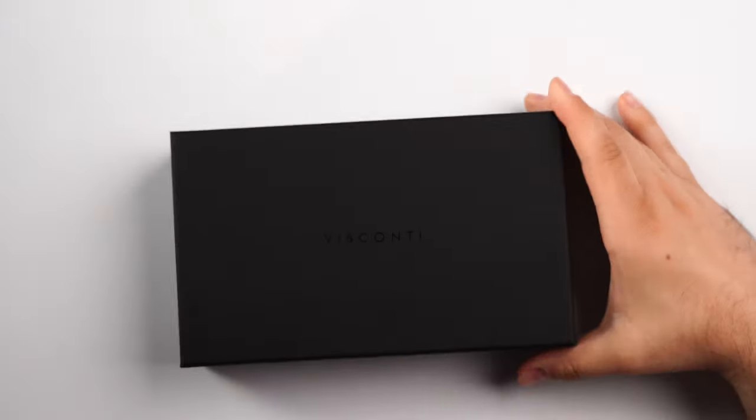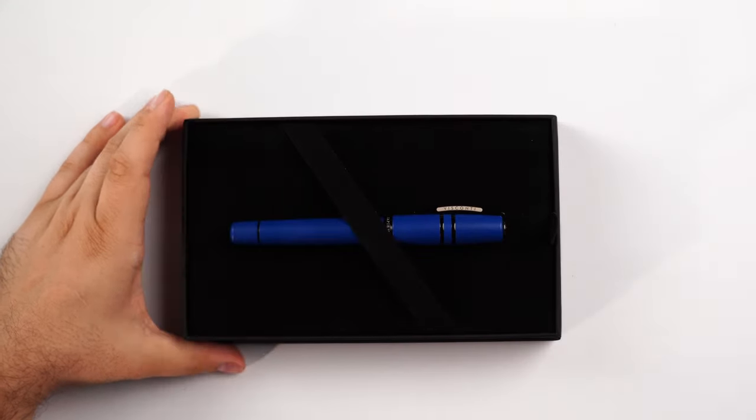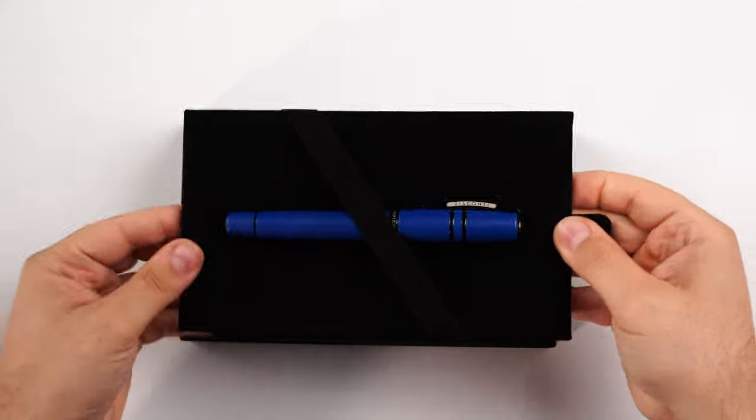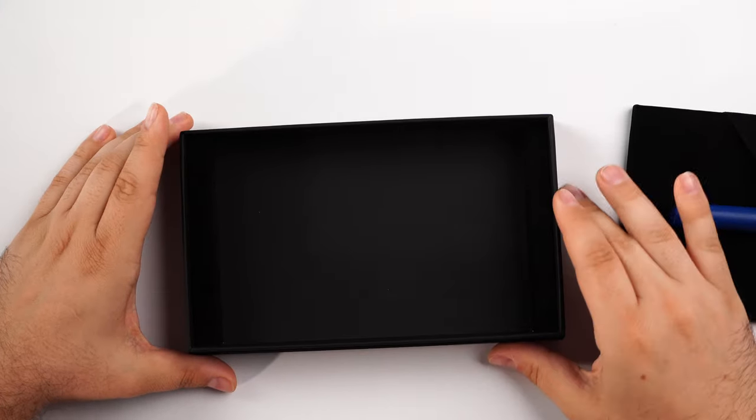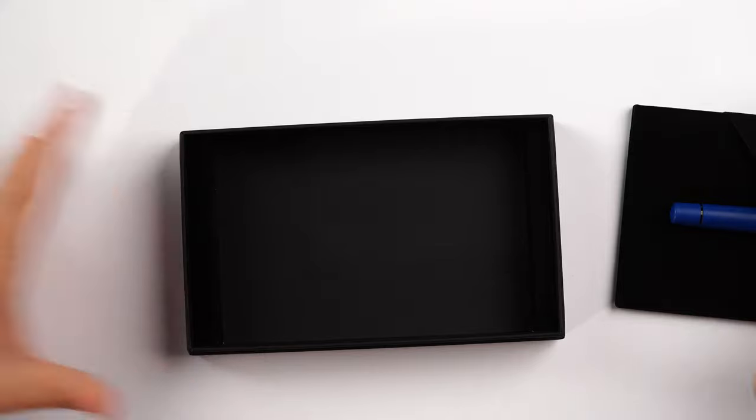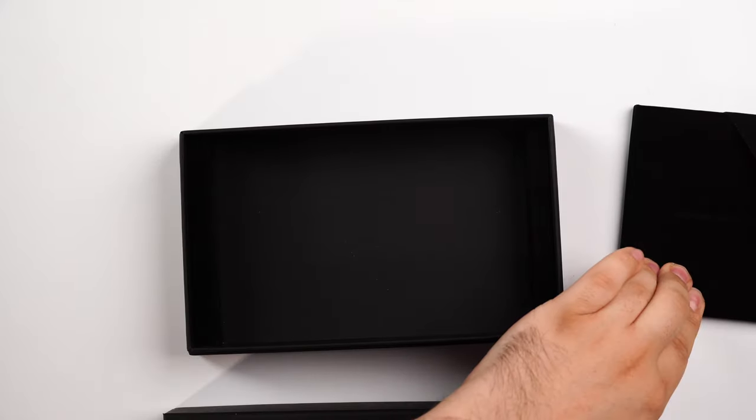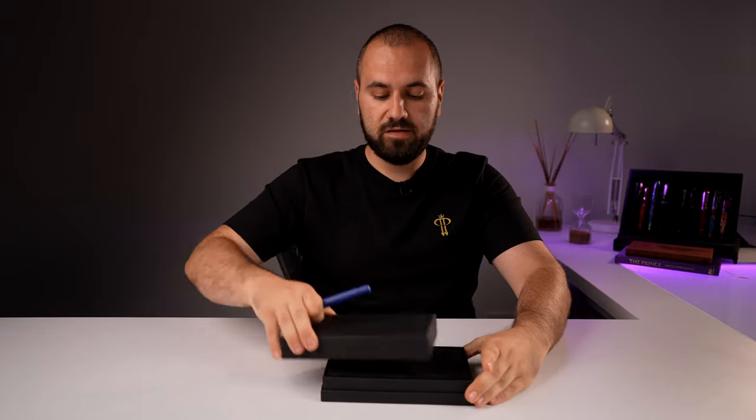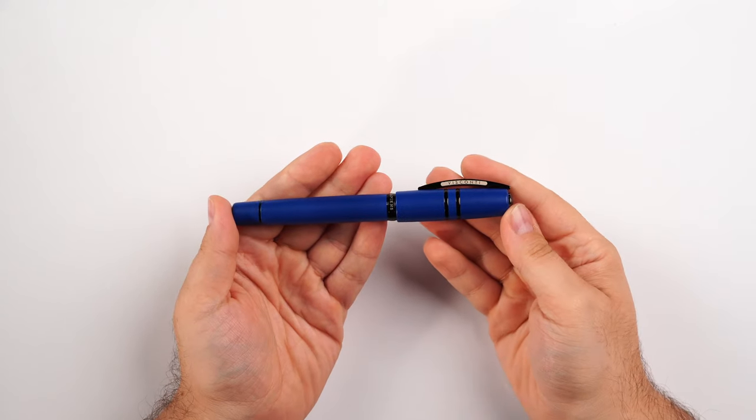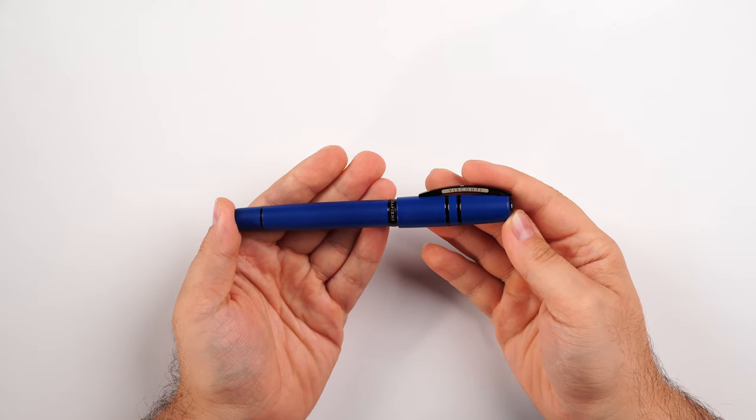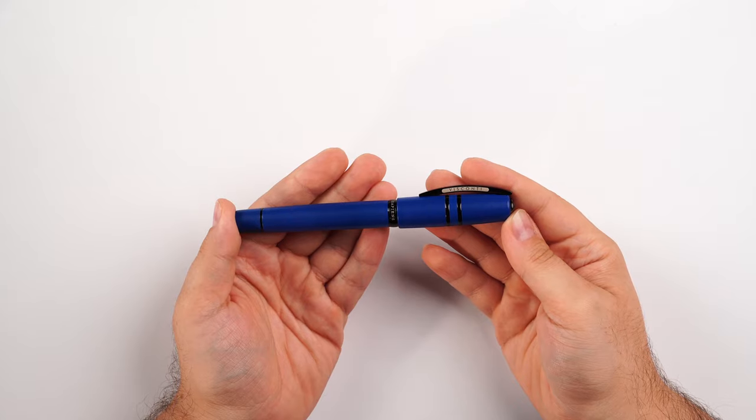This is the box. It's blacked out Visconti on the lid. We open the lid, and this pen rests. We have the fountain pen, and under here, you would supposed to get the warranty card and all of the information of this collection. I don't have it right here in this box. Let me put everything aside, and I'm going to show you the fountain pen in details.